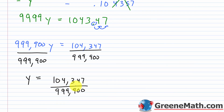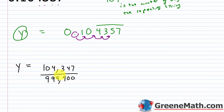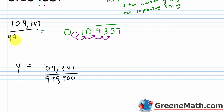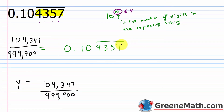Now 104,347 is a prime number, so we can't reduce this fraction. Since y equals this, we can say that 104,347 over 999,900 equals 0.10 with the 4357 repeating forever.